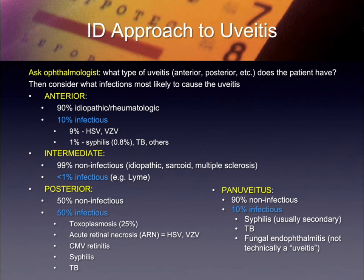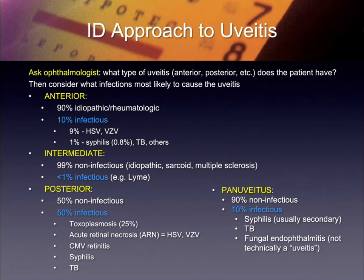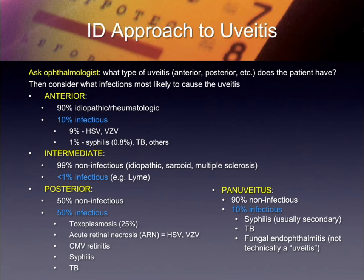If it's intermediate, it's really uncommon for infection to be in that part of the eye, and the one thing that does come up occasionally is Lyme — so you'd have to get a history of where the person lives, tick bites, et cetera. Posteriorly, it's almost 50-50 non-infectious and infectious — most of it is probably going to be toxo. Acute retinal necrosis, ARN, is usually HSV or VZV. Back in the early HIV days we would see CMV retinitis a lot, plus syphilis and TB. Just have this as a reference.